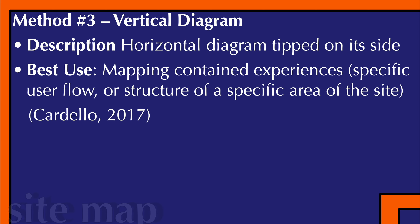Finally, the vertical diagram. If you take a horizontal diagram and tip it on its side, that's a vertical diagram. The very best use for a vertical diagram is to map contained experiences, like a specific user flow or the structure of a specific area of the site — they seem to be better suited for that.